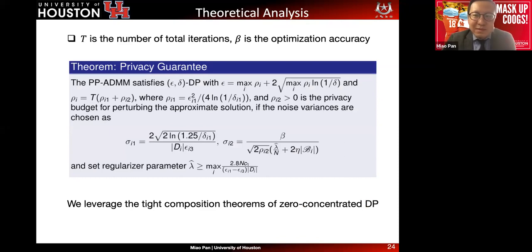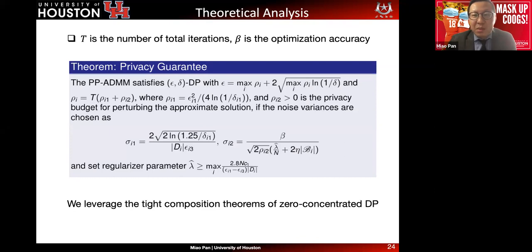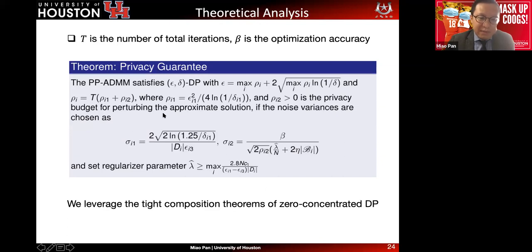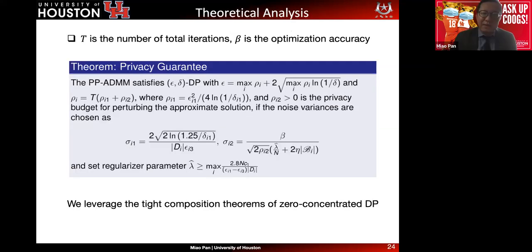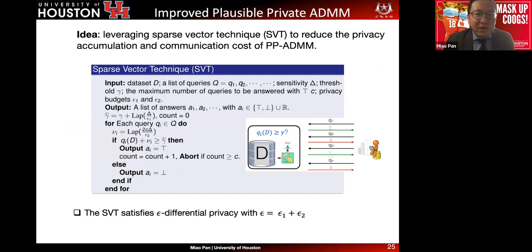We introduce beta as the optimization accuracy level. Using the ZCDP composition property, we put all per-iteration budgets together to derive the overall privacy guarantee. However, making the ADMM plausible/feasible is not enough — it may not be communication efficient. We want to propose further techniques using SVT, the Sparse Vector Technique, to reduce the privacy cost and make it communication efficient as well.